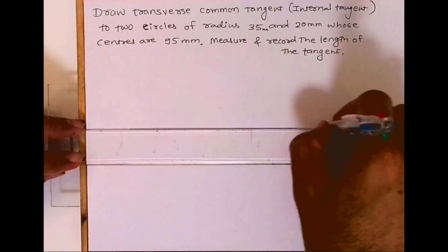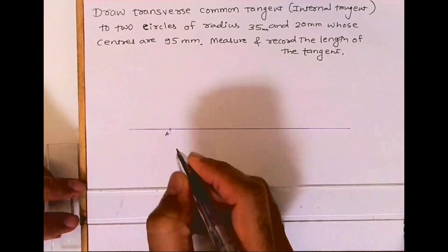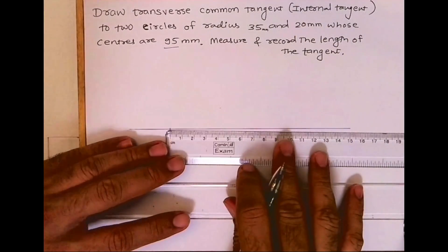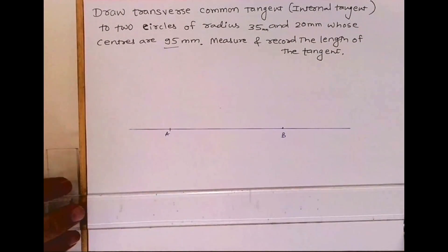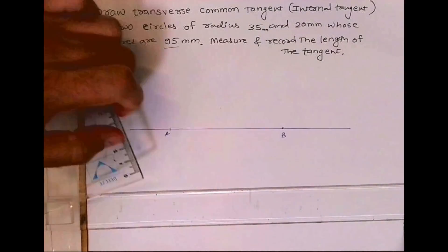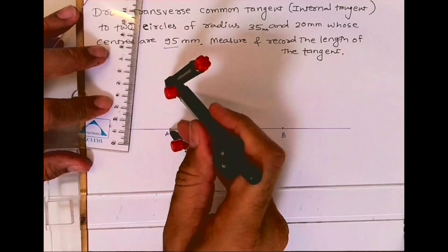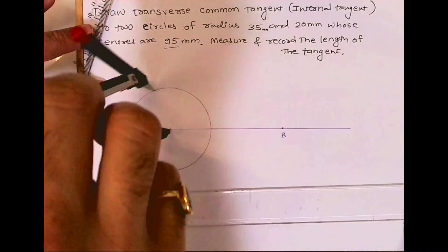Measure and record the length of the tangent. First, we will mark points A and B 95mm apart. From A we'll draw radius 35, and from B we'll draw radius 20.